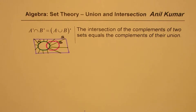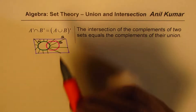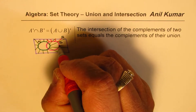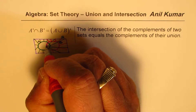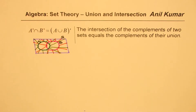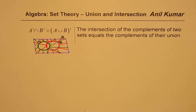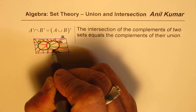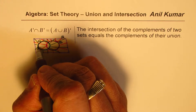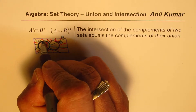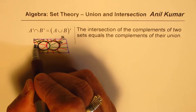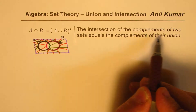Now when we say complement of B, it means everything outside B — some portion could be inside A as well. Now when we say the intersection of these two complements, it means everything which is outside B and not in A. So everything outside both sets is what is called the intersection of the complements of these sets.